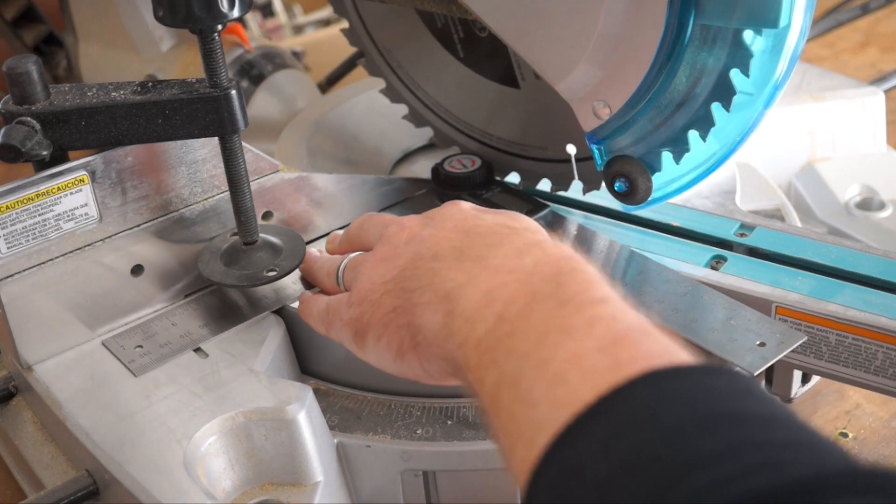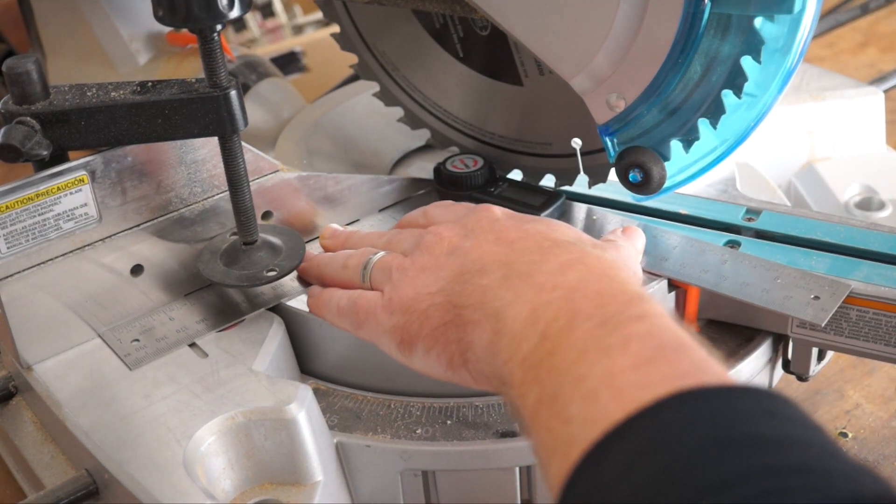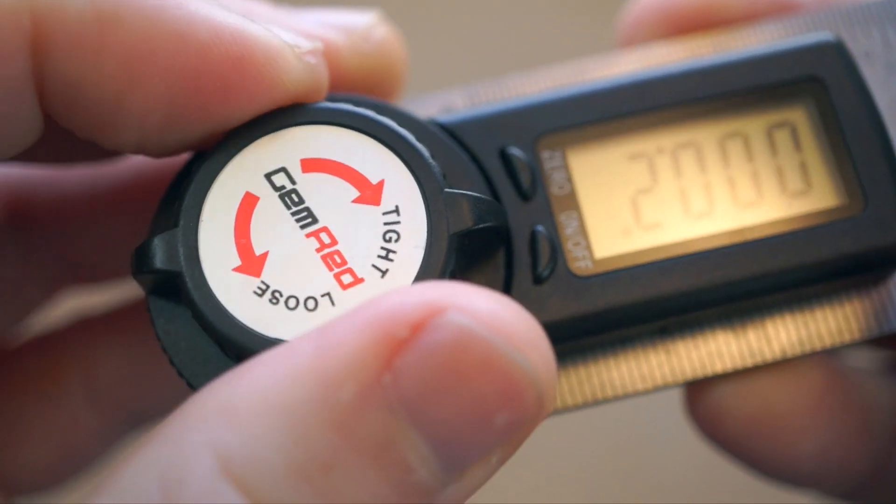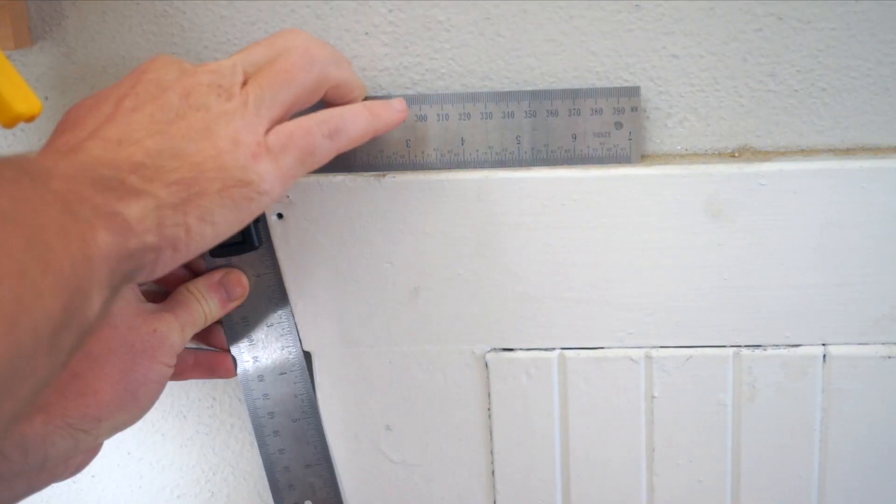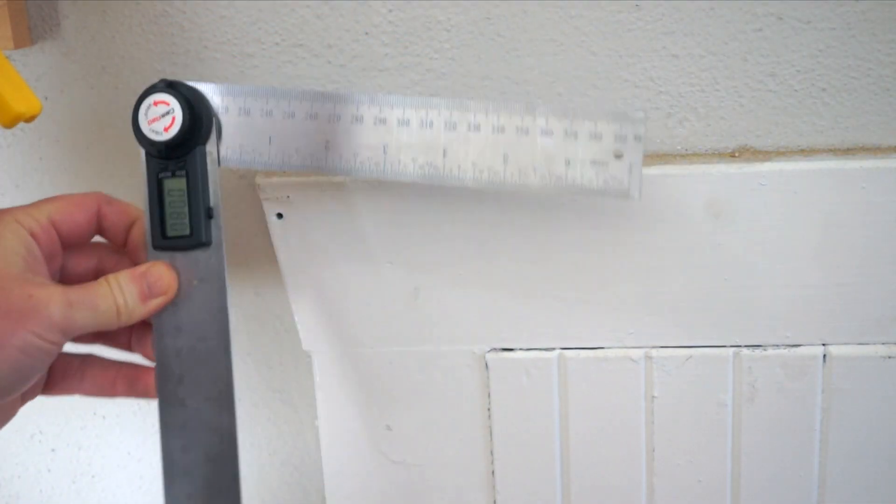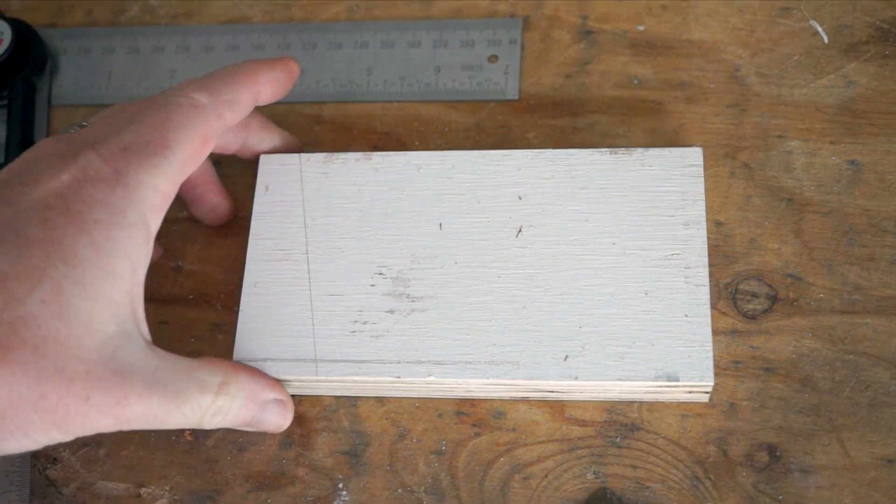If your tool's built-in angle guide isn't reliable, you can use this to verify it or calibrate it. And for me, one of the best features of this tool is that you can tighten this nut on the hinge to lock an angle in place. This way you can measure an angle, lock it in, and then transfer it right to whatever material you're using to reproduce the angle.